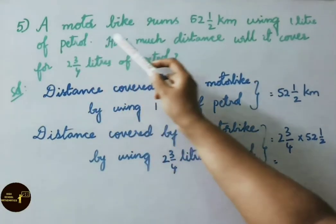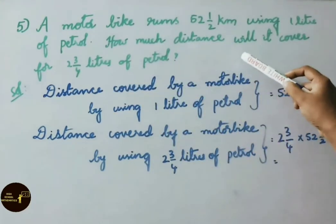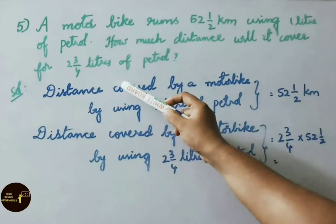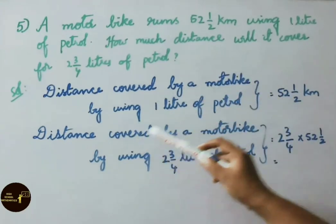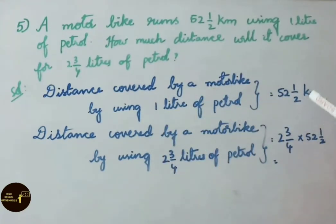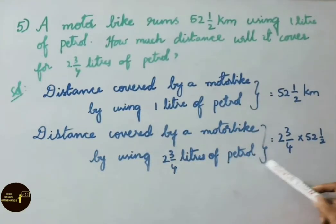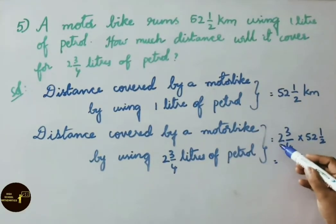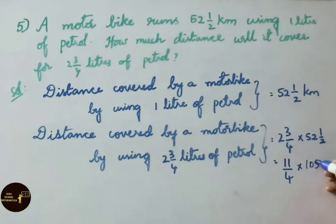Question 5: a motorbike runs 52 and a half kilometers using 1 liter of petrol. How much distance will it cover using 2 and 3 by 4 liters of petrol? Distance equals 2 and 3 by 4 into 52 and a half. Converting to improper fractions: 4 twos are 8, plus 3 is 11, so 11 by 4. For 52 and a half: 2 fifty-twos are 104, plus 1 is 105 by 2.